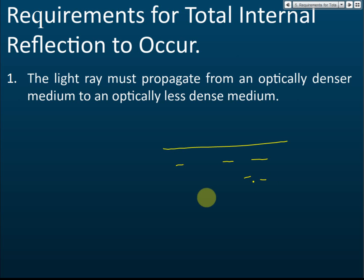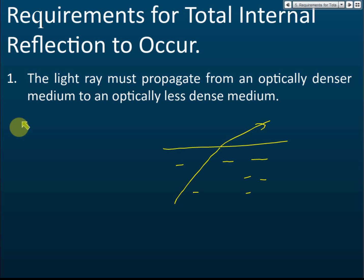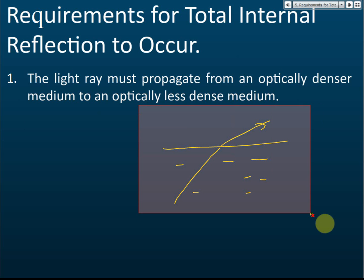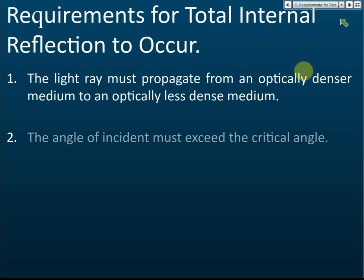For example, if you have water, the light ray must travel from water to air. This is why we seldom see total internal reflection in daily life — we live in air, and we rarely encounter a medium less dense than air. The light we see always travels from less dense to denser medium, but total internal reflection requires the opposite: from denser to less dense.